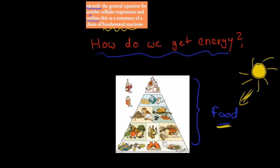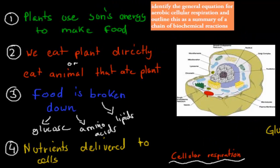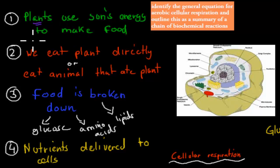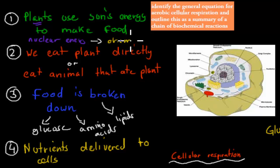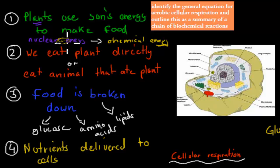There are a couple of steps to get to a place where we can use that energy. First, plants need to use the sun's energy to make food — transferring nuclear energy from the sun into chemical energy in the form of glucose. That chemical energy we can then eat and later use to make energy. So we've transferred it from the sun's energy, which we can't use directly, into chemical energy via plants, which we can eat and use.